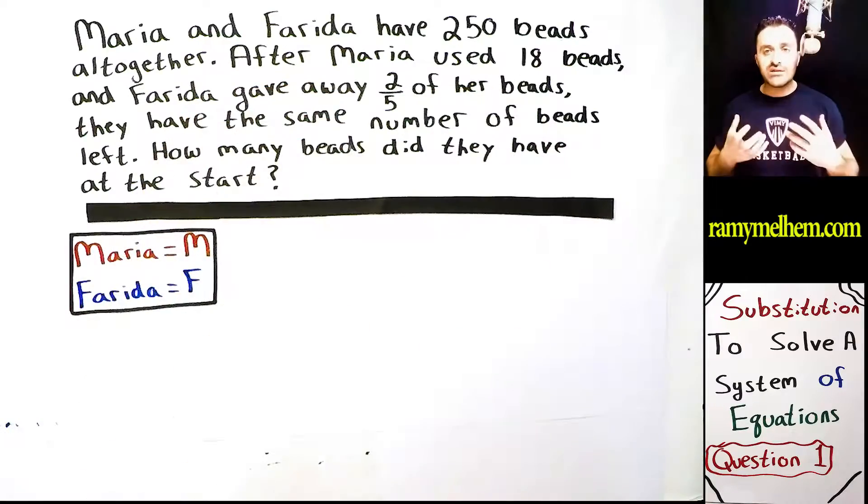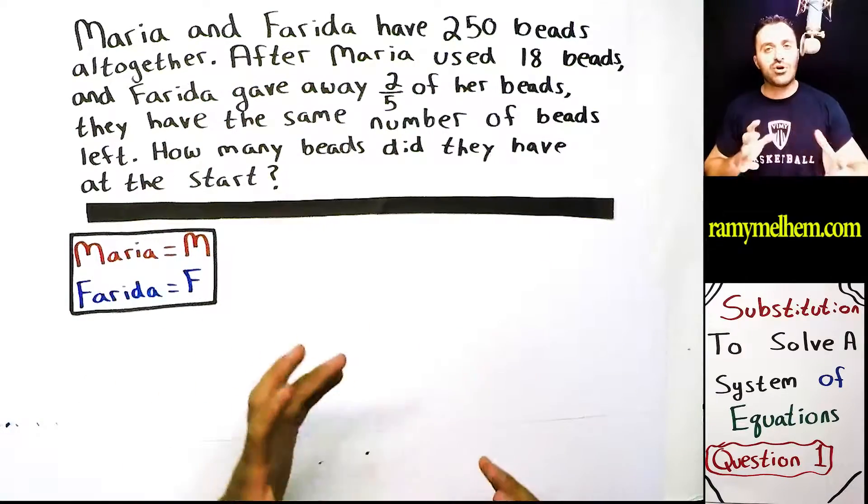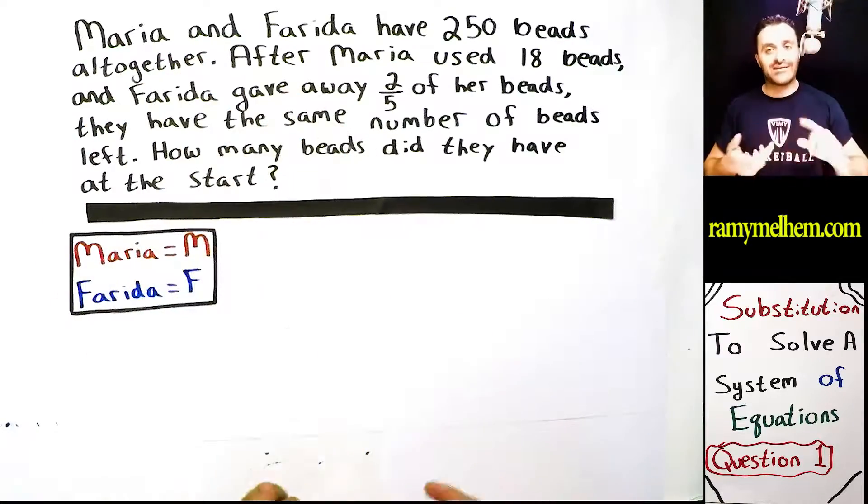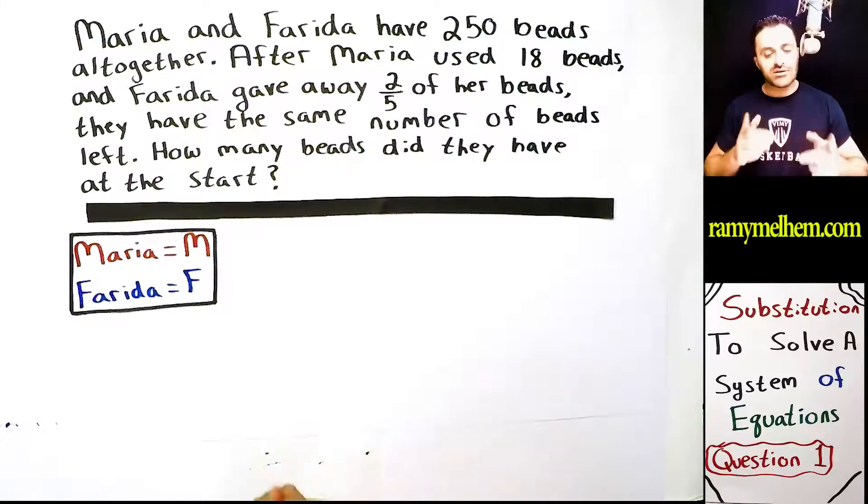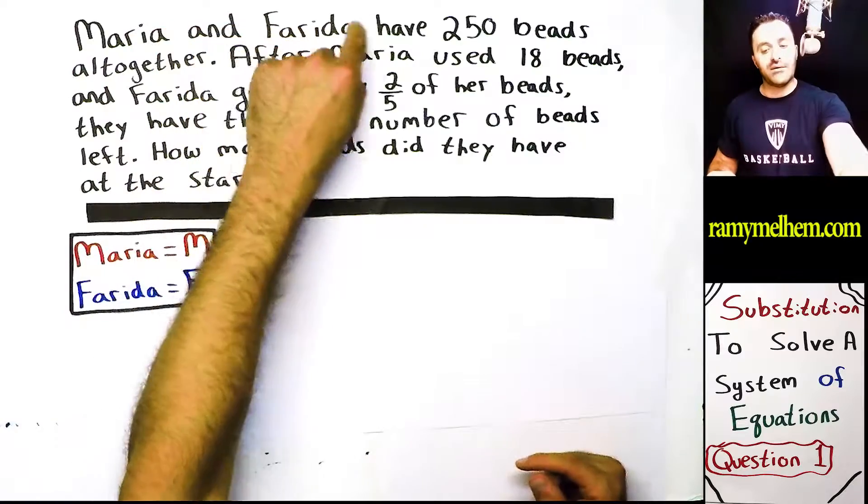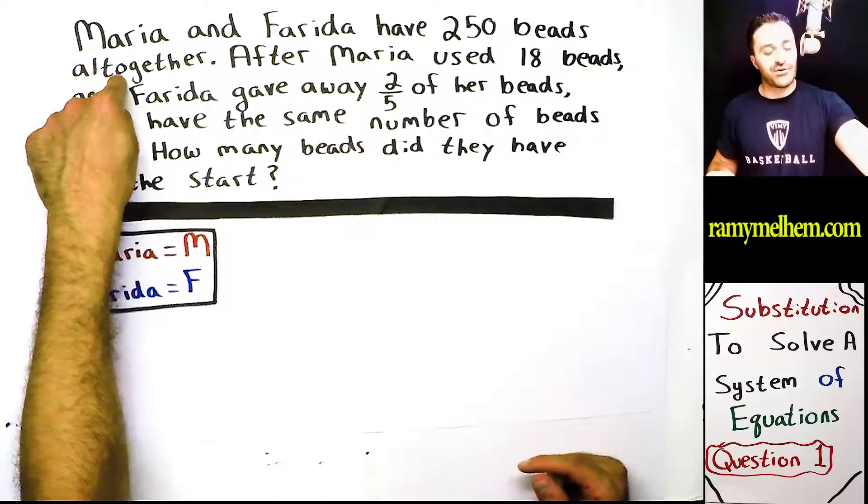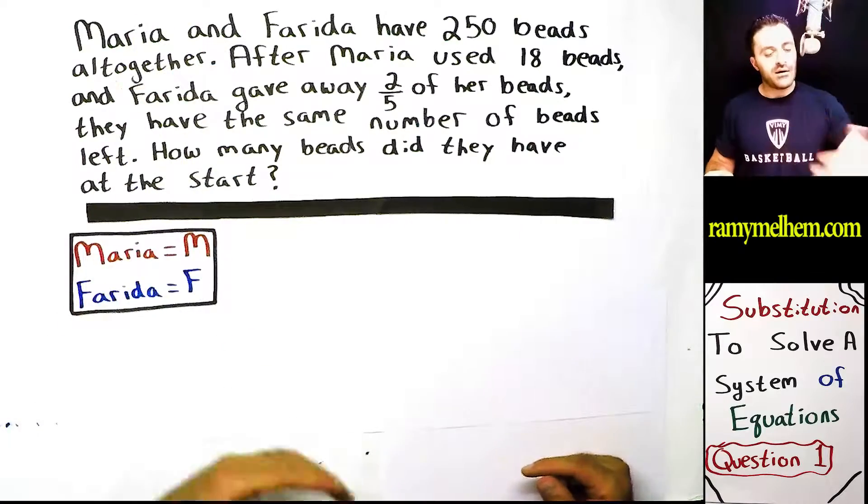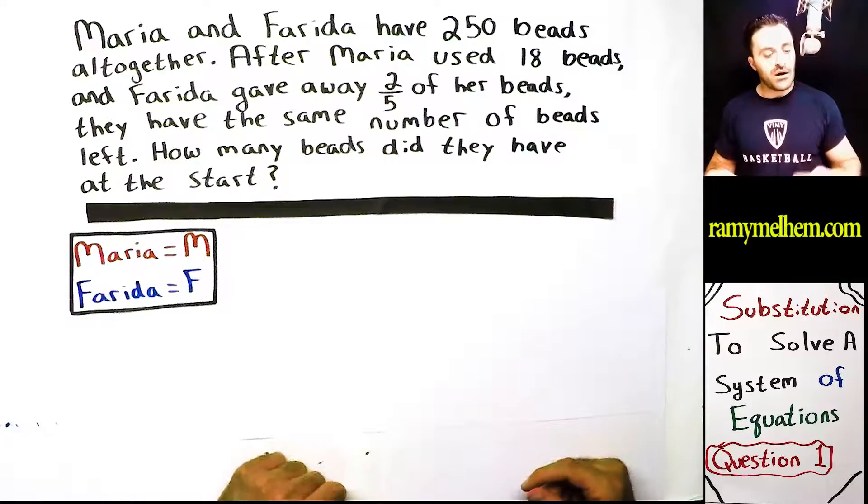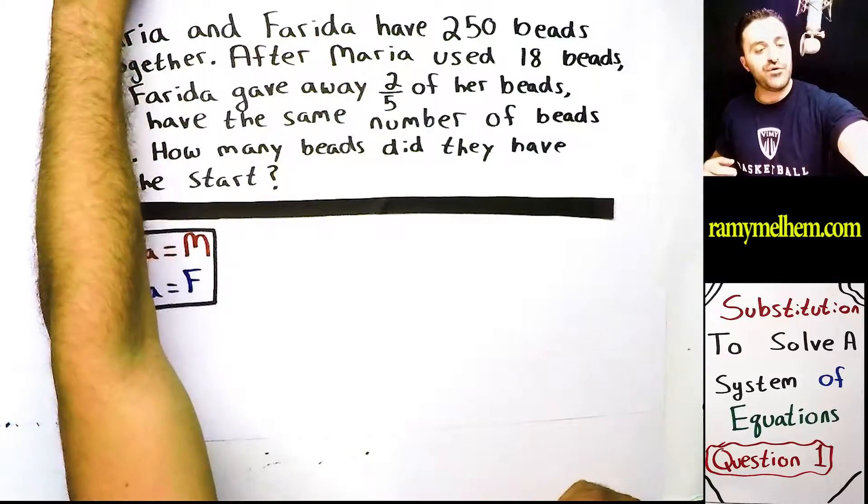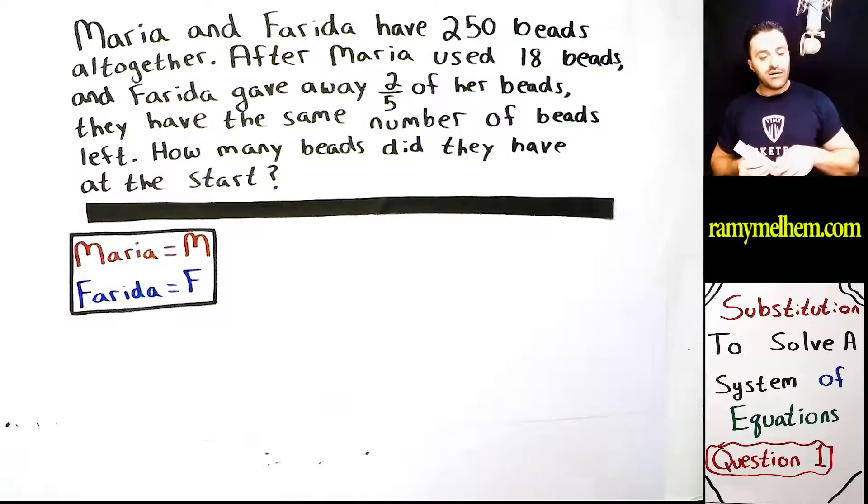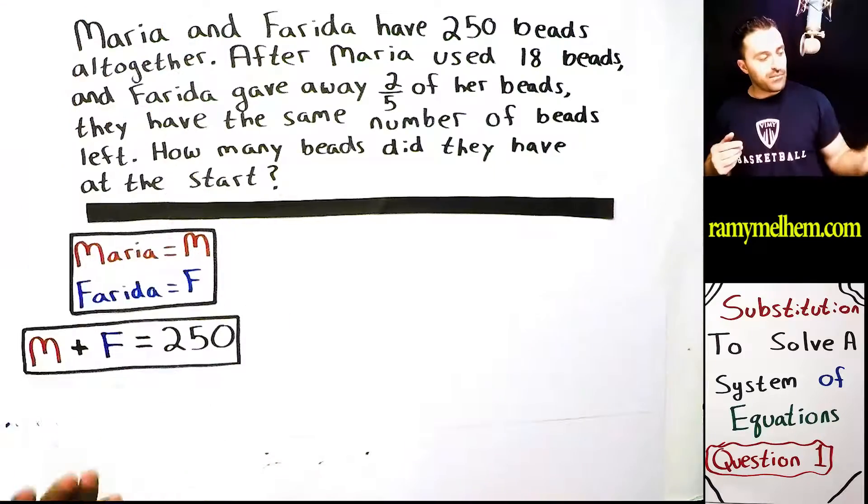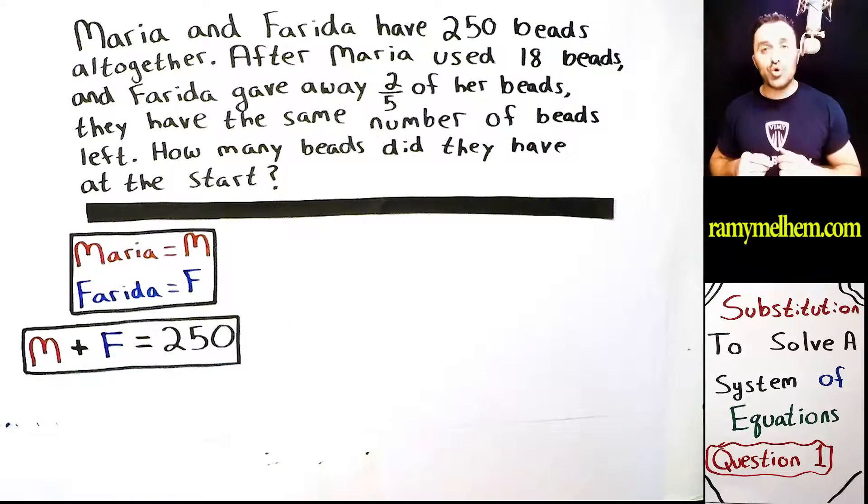So now that we've established the variables, let's go back to the question and now we can start looking for those magical math words. What do I mean by magical math words? I'm talking about those words that tell us to add, subtract, multiply, or divide. Let's go back and look for them. Maria and Farida have 250 beads all together. Altogether sounds familiar. So does AND. Put them together, we're talking about addition here. So Maria and Farida have 250 beads all together. That's what it looks like. Maria plus Farida equals 250 beads.